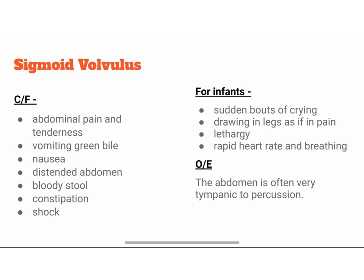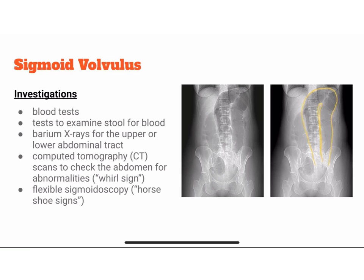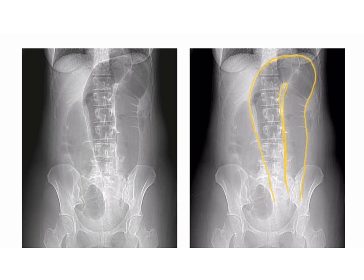Now we are going to talk about sigmoid volvulus. The clinical features are abdominal pain and tenderness, vomiting, green bile, nausea, distended abdomen, bloody stool, constipation, and shock. For infants: sudden bouts of crying, drawing in legs as if in pain, lethargy, and rapid heart rate and breathing. On examination, the abdomen is often very tympanic to percussion. Investigations include blood tests, tests to examine stool for blood, barium X-rays, computed tomography, and flexible sigmoidoscopy, where a horseshoe sign is seen as shown in the picture.